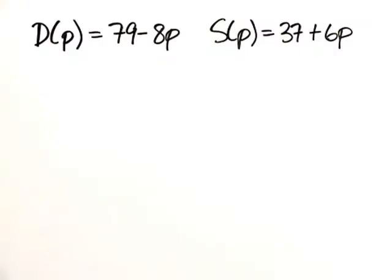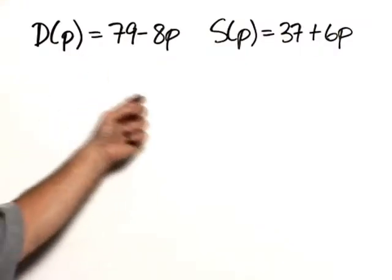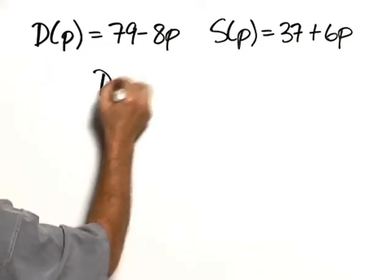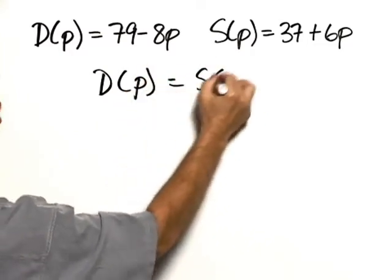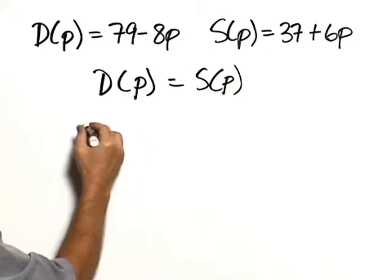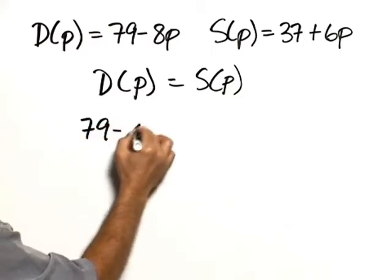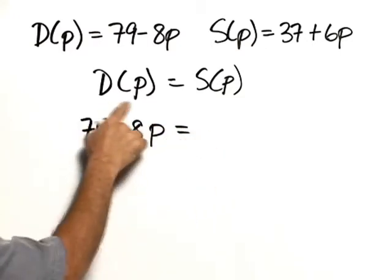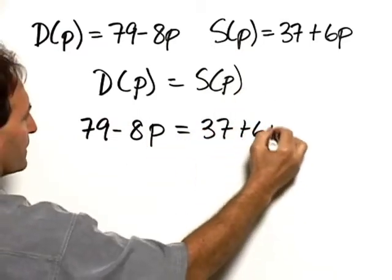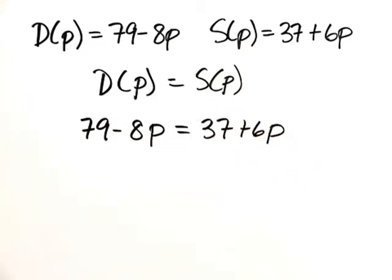So we have our two functions for demand and supply. The equilibrium point is the point at which D(p) is equal to S(p). So we simply substitute the formulas: 79 minus 8p for D(p), and 37 plus 6p for S(p). And we now solve this equation for p.